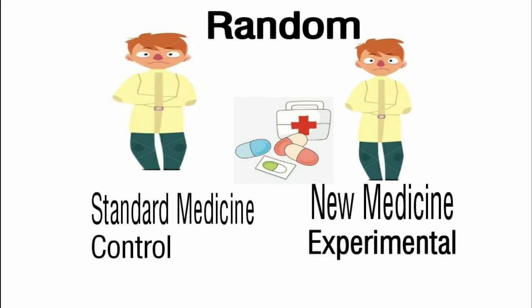We have standard medicine and new medicine. So we have a patient with a mental problem. They are randomly selected — the first group gets standard medicine or prescribed medicine used in the hospital, so that is the control group. The experimental group gets the new medicine. After one month, we look at the results. That is where experimental research comes in.